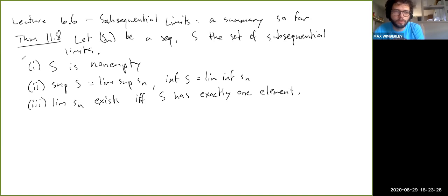So two of these, parts one and three, are actually pretty much trivially consequences of things that we've already done. So this is because we know from theorem 11.7 that S contains at least the lim inf and lim sup. So this is from 11.7, which we just did, S contains the lim inf and lim sup.